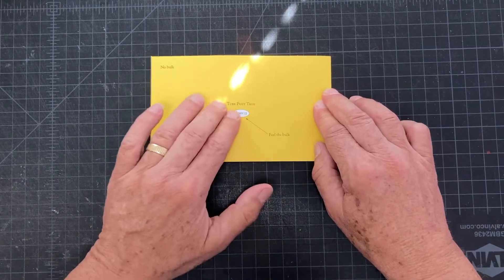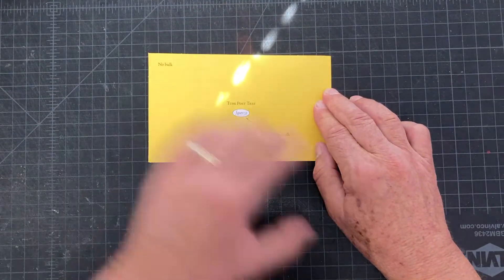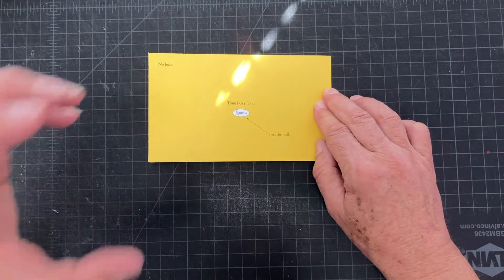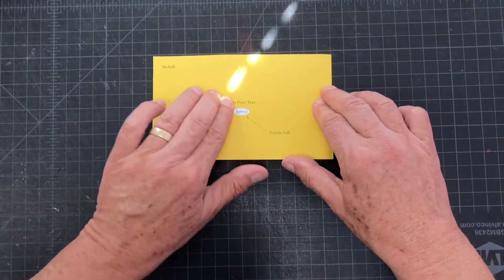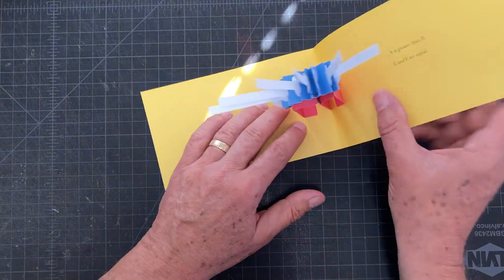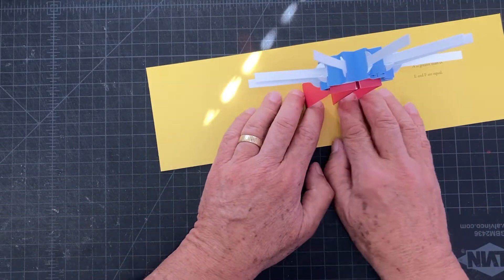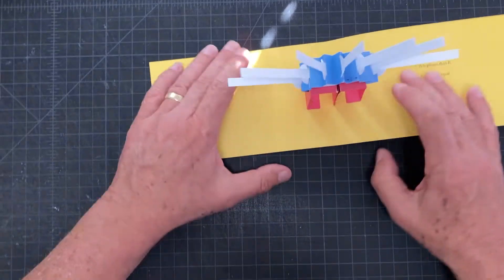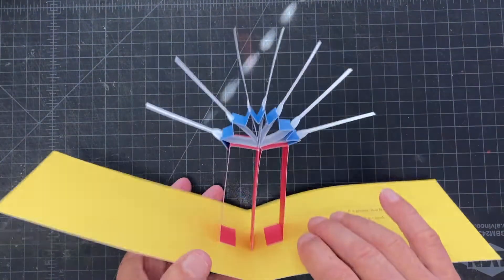Whereas if you think about how the bulk is placed on the page, you can avoid that super heavy thickness. Okay, there we go. And there she is. All right.